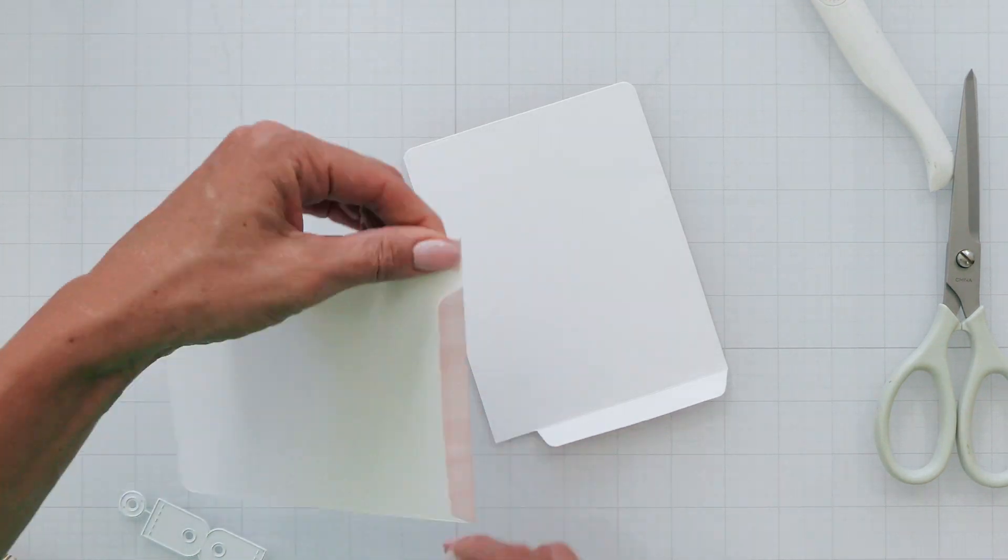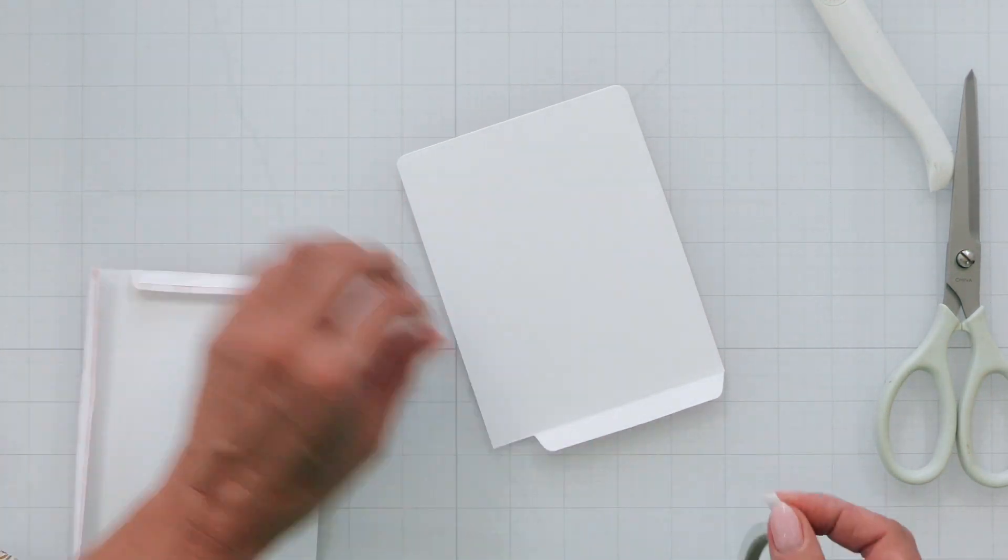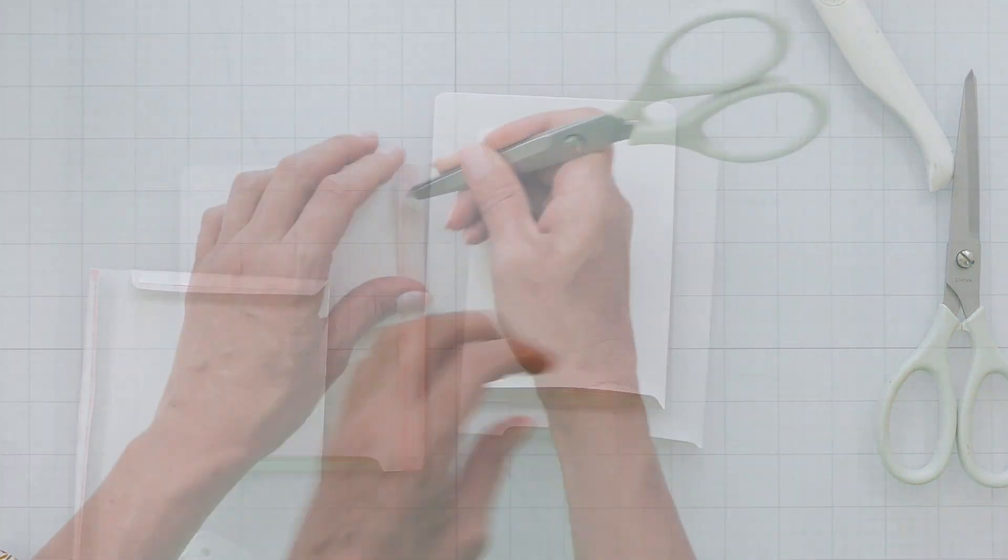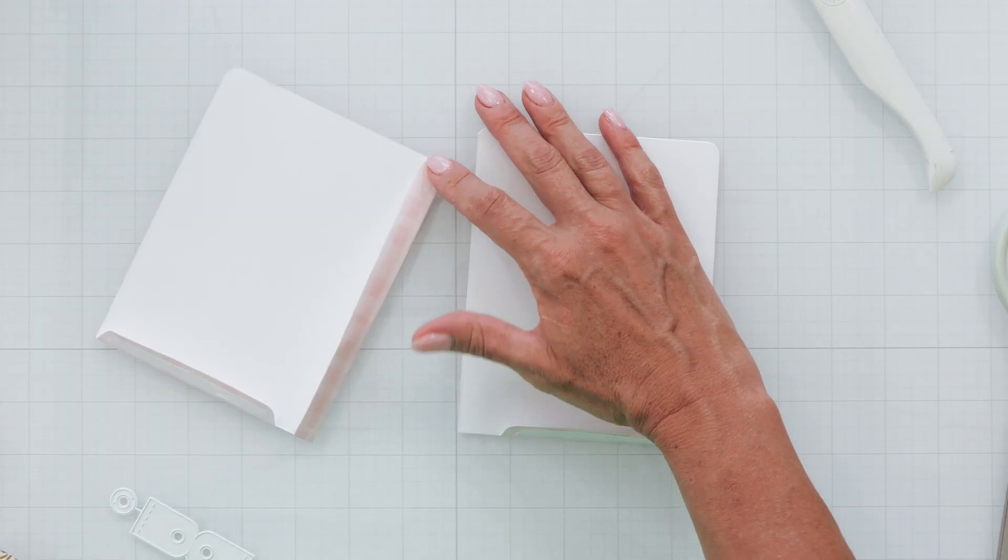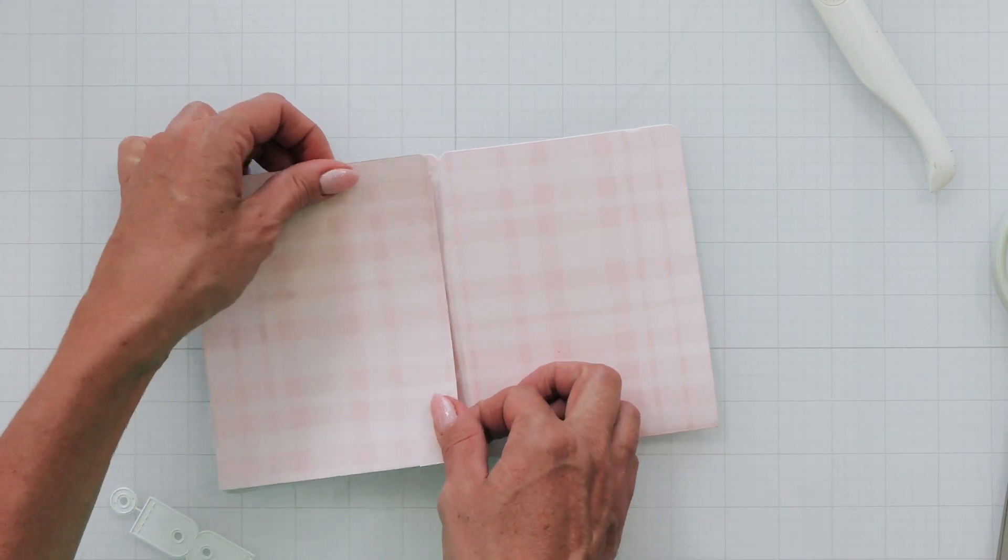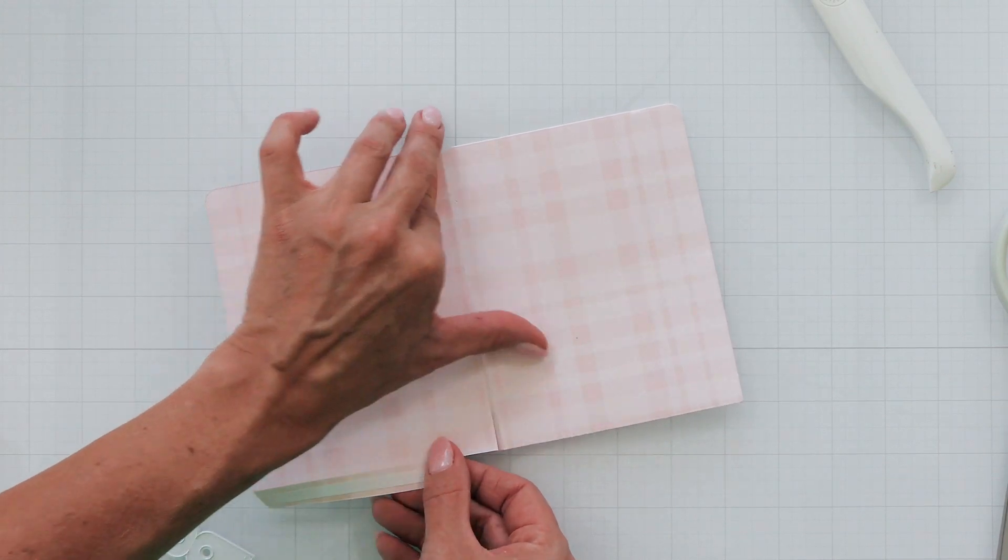You'll want to add some double stick tape to the long flap and to the two bottom flaps as well. Now you'll go ahead and remove that protective covering from the tape and I find it easiest to flip my project over and align that cut edge to the center seam. This helps me make sure it's really straight.